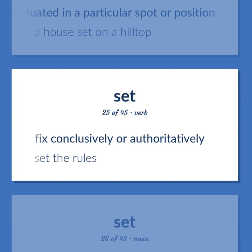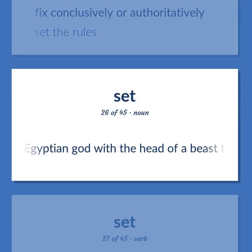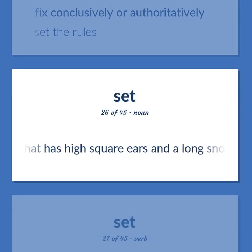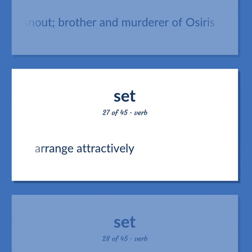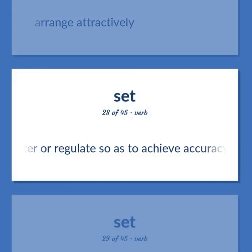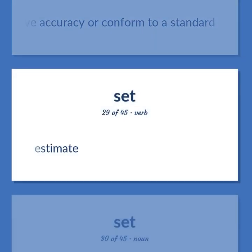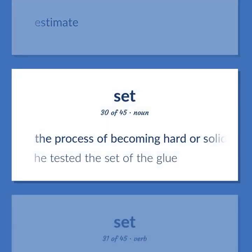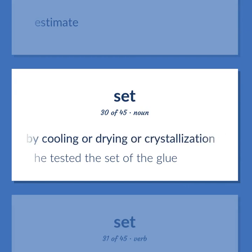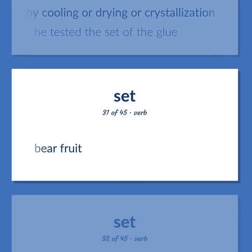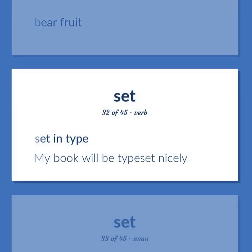Fix conclusively or authoritatively. Set the rules. Evil Egyptian god with the head of a beast that has high square ears and a long snout; brother and murderer of Osiris. Arrange attractively. Alter or regulate so as to achieve accuracy or conform to a standard. Estimate. The process of becoming hard or solid by cooling or drying or crystallization. He tested the set of the glue. Bear fruit. Set in type. My book will be typeset nicely.